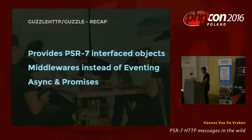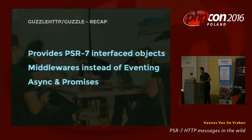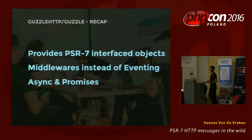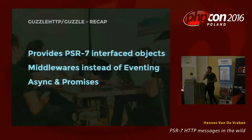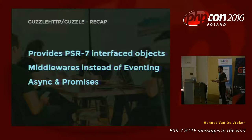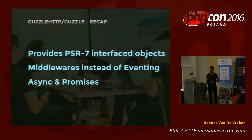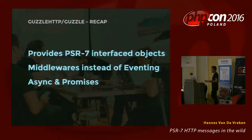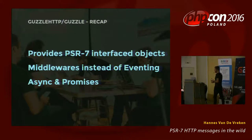To recap the Guzzle chapter: Guzzle provides a PSR7 implementation — all objects in guzzlehttp/psr7 are interfaced with PSR7. Guzzle version 6 provides middlewares instead of event subscribers and emitters. You can do async calling using sendAsync() or requestAsync(), which return promises. You can append callbacks with the then() method, which execute whenever the response comes back.